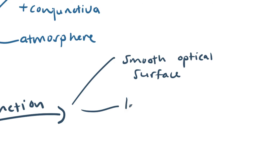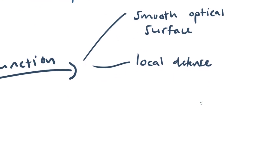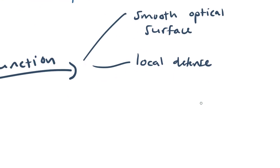Another important function is that of local defense. So our bodies have innate and adaptive immunity and the tear film forms an important part of the innate immunity of the eye.